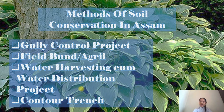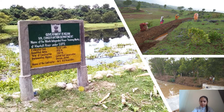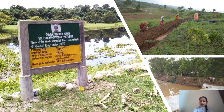Before moving on, let's look at the pictures of the means adopted by Assam. As you can see, there is a picture of a place where a soil conservation project is being run. There is a board that reads 'Government of Assam Soil Conservation Department.' It is surprising to know that the estimated cost to run these projects is very high — 50 lakhs — because soil conservation is a very important task.